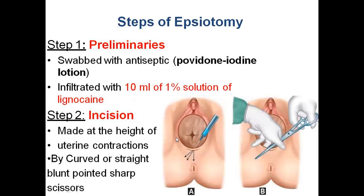Always we have to clean the vulva area with antiseptic. The area is infiltrated with local anesthetic drug — lignocaine can be given as a 1% solution. The incision is made at the height of uterine contractions by curved, blunt-pointed, sharp scissors.